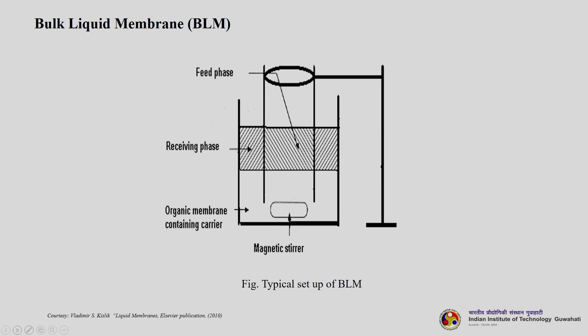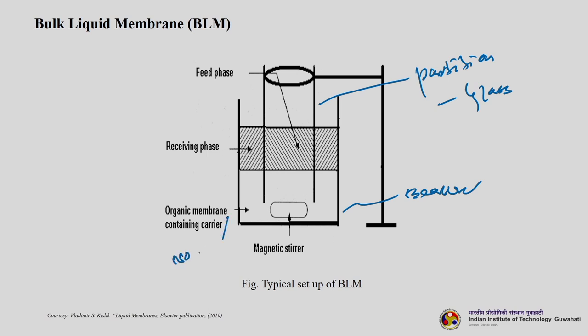BLM is the most simplest type, which I was just showing using the U-tube manometer example. Here you can see a beaker-type setup with two glass partitions. Your organic membrane containing carrier — or without carrier — is placed between them. This is the liquid membrane part. There is a receiving phase on one side and the feed phase on the other, with a magnetic stirrer rotating to enhance the rate of mass transfer. This is a typical BLM setup.